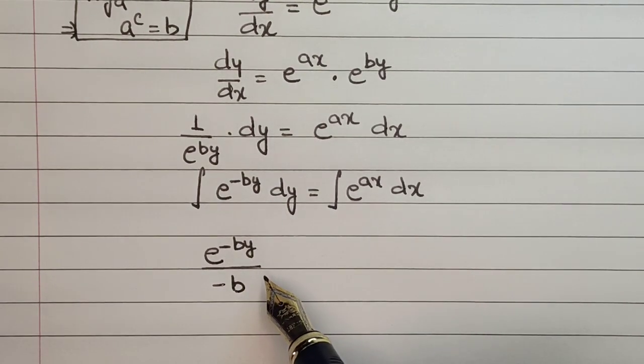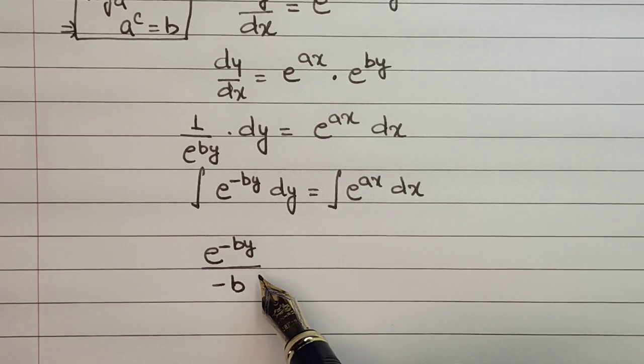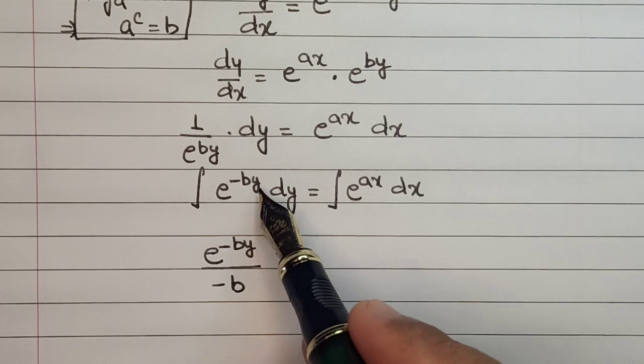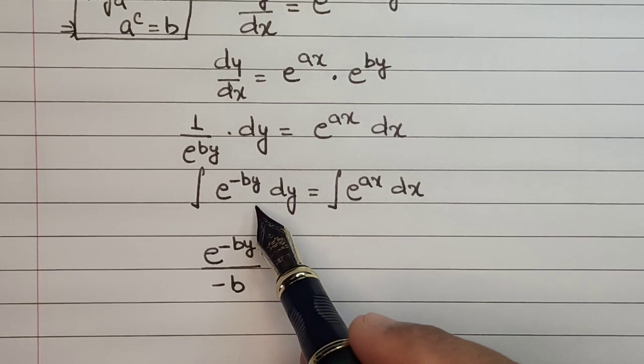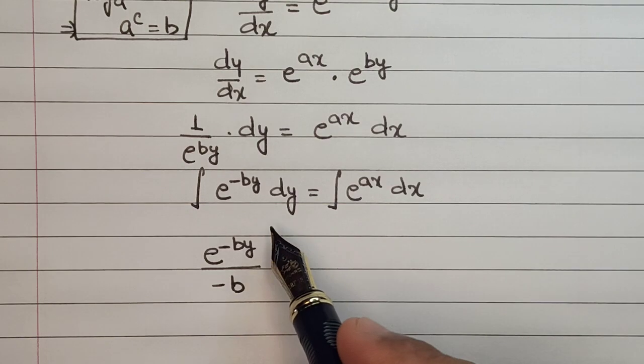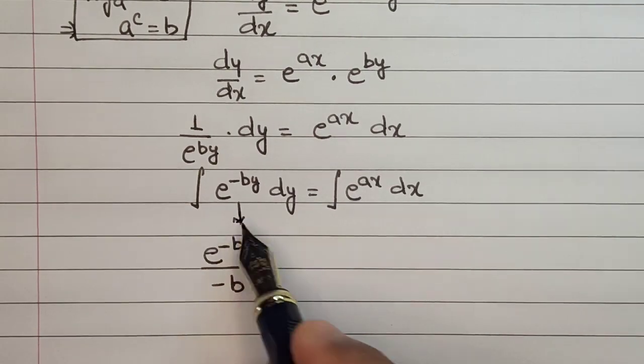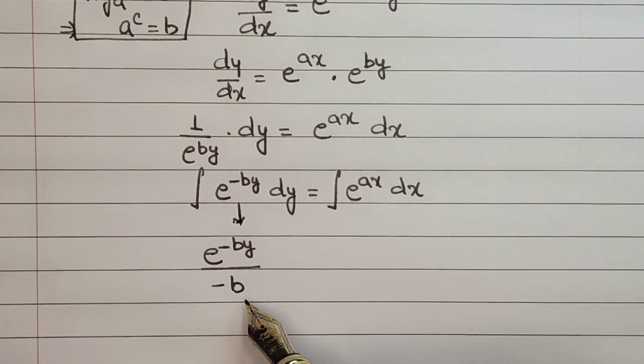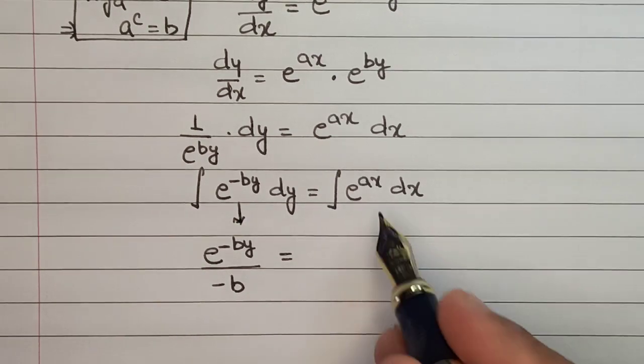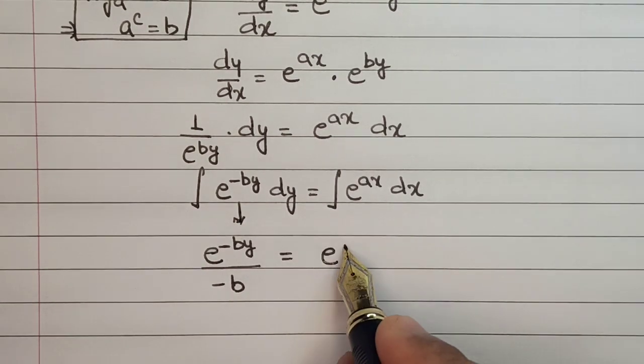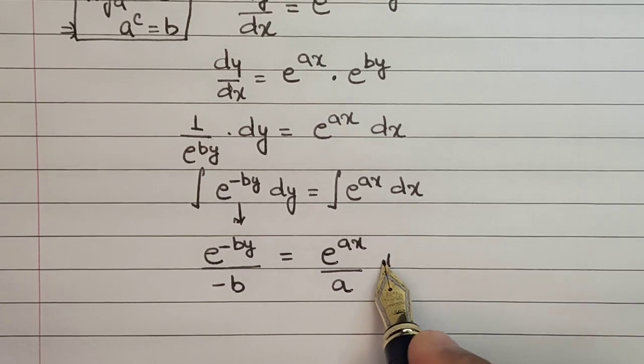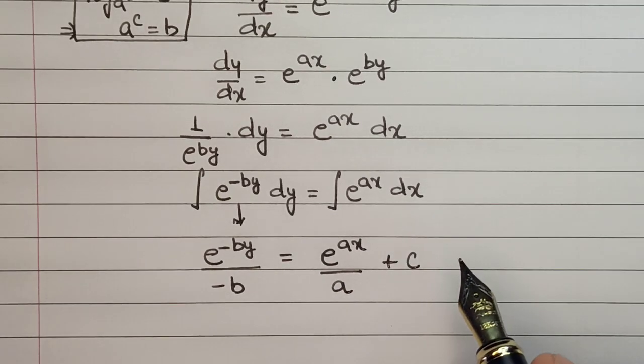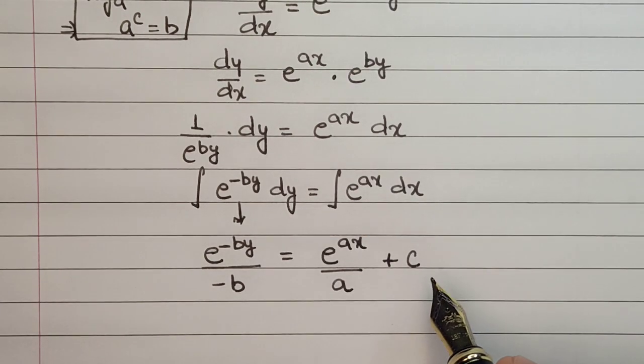The other way to do this is to take -by as t, and then you can calculate the value of dy which will be in terms of dt. But in a single step, I have directly arrived at the answer. Same is the procedure on this side: e^(ax)/a, and then we add an integration constant c.